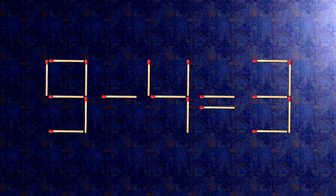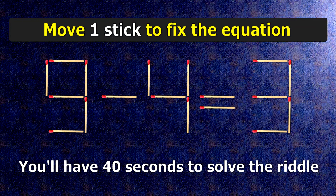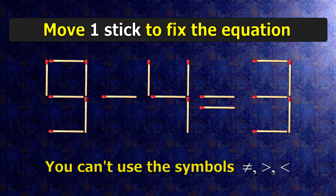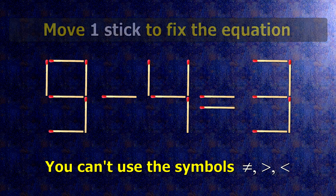We have the equality 9 minus 4 equals 3. Our equality is wrong. We need to move one match to make our equality correct.